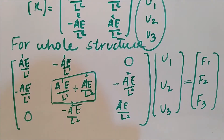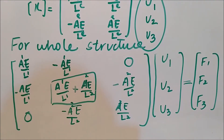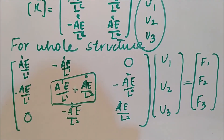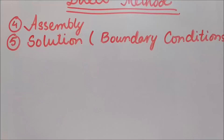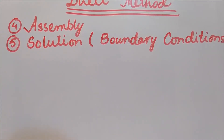Now moving to the fifth step of the direct method: finding the solution. If we have boundary conditions or available conditions, we plug them in to find the values of the desired variables.